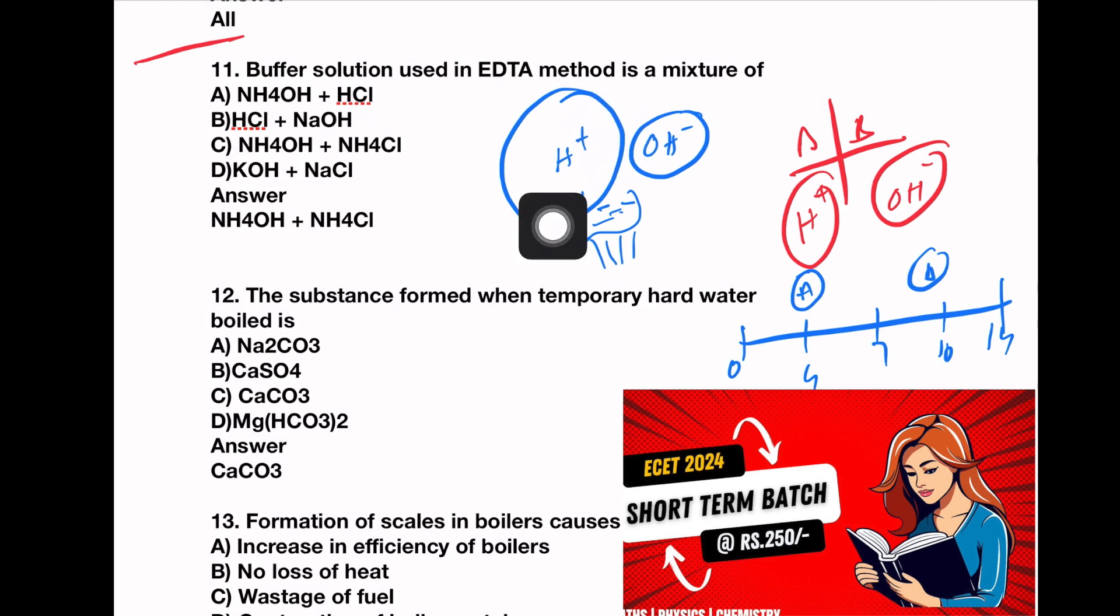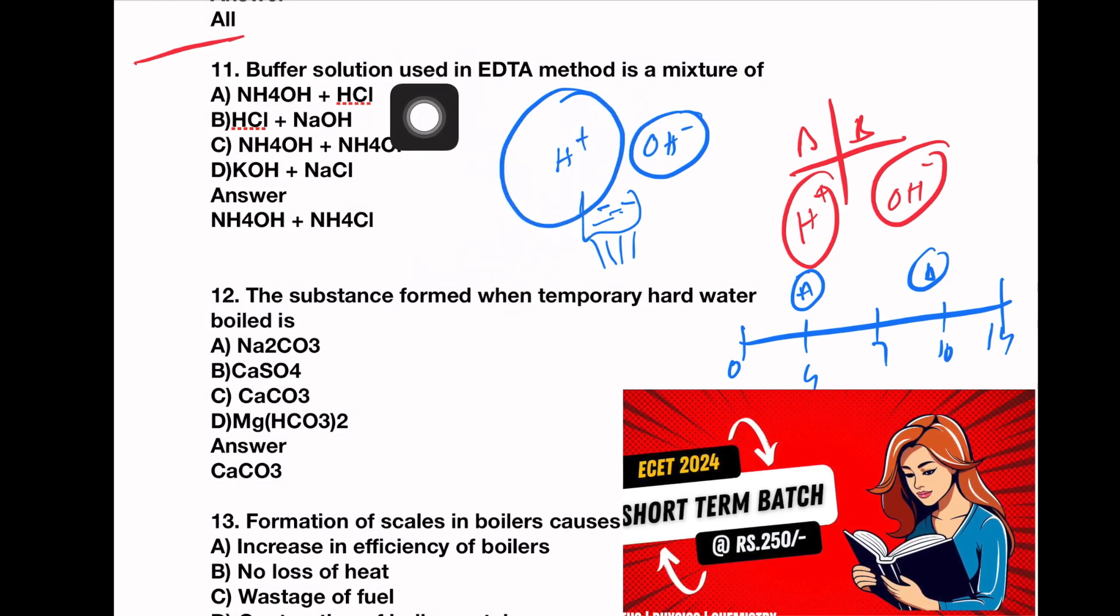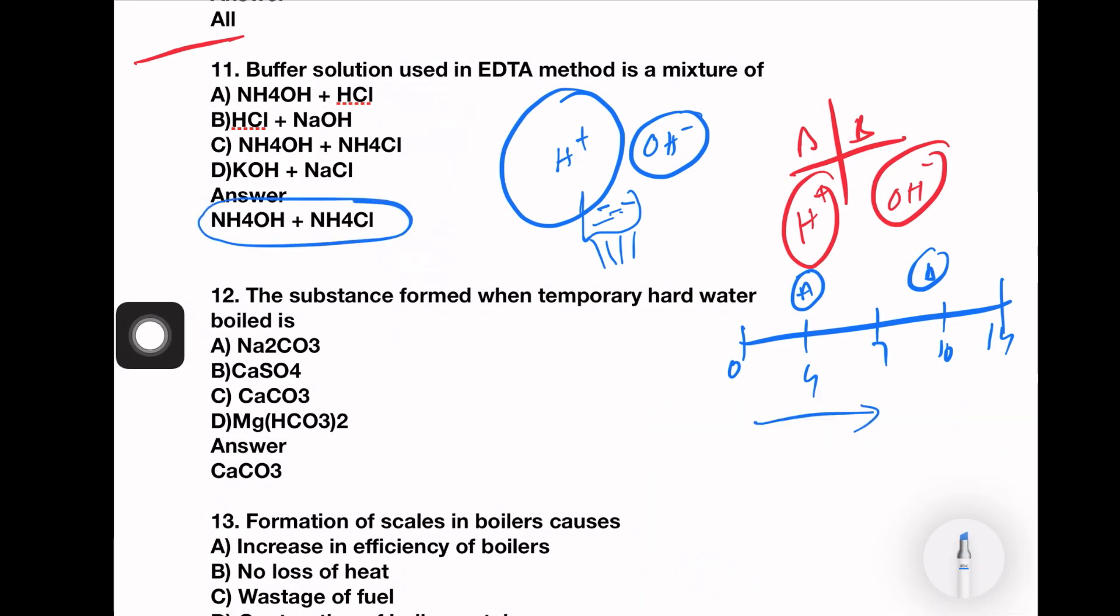And now we have NH4OH plus hydrochloric acid. This is important because NH4OH plus HCl. This is important.